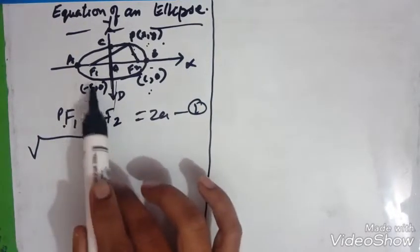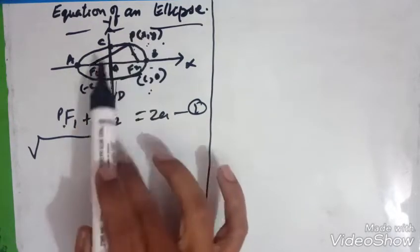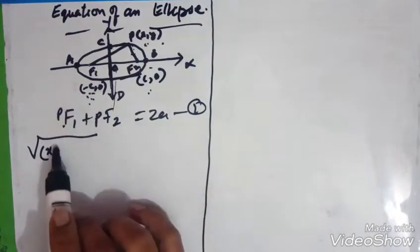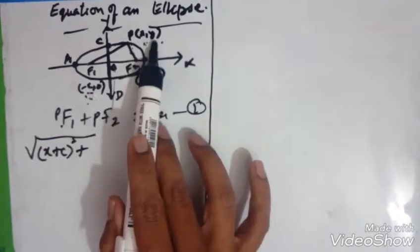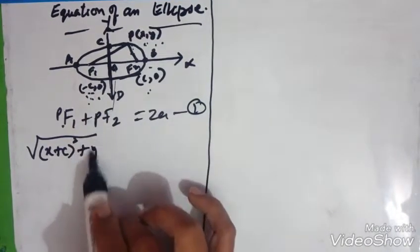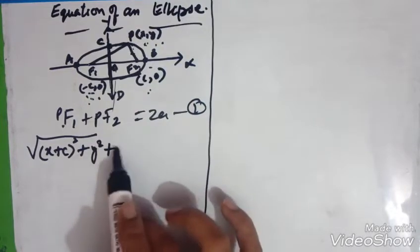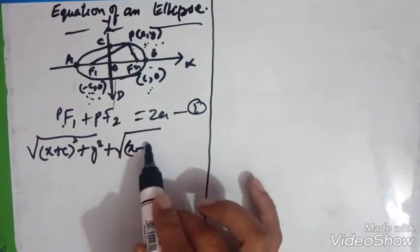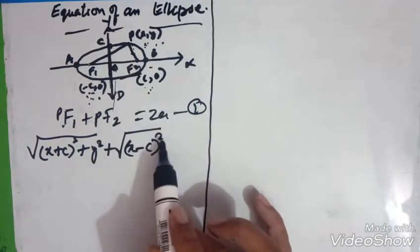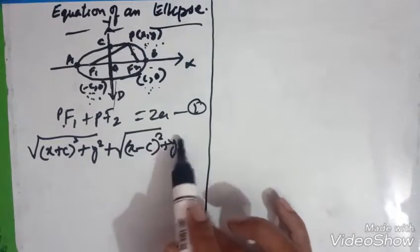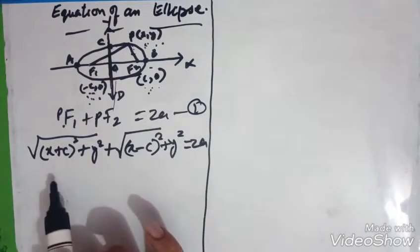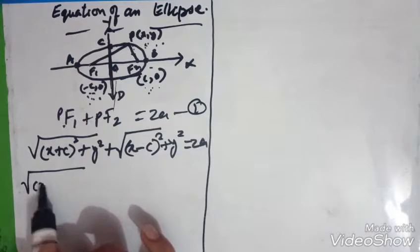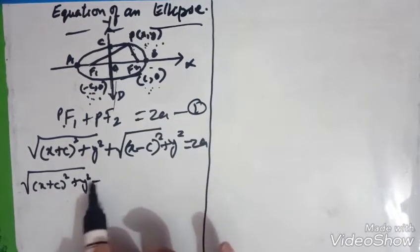So for PF1, taking P as (x, y) = (x2, y2) and F1 = (−C, 0) = (x1, y1), we get PF1 = √[(x − (−C))² + y²] = √[(x + C)² + y²]. Similarly, PF2 = √[(x − C)² + y²]. Substituting into PF1 + PF2 = 2A, we get √[(x + C)² + y²] = 2A − √[(x − C)² + y²].